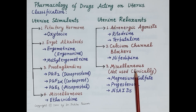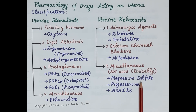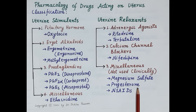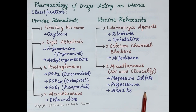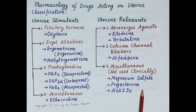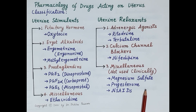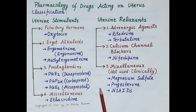Miscellaneous drugs used as uterine relaxants but not used clinically include magnesium sulfate, progesterone, and non-steroidal anti-inflammatory drugs. The information provided in this video is meant exclusively for students from an examination point of view. For clinical use of tocolytics as well as uterine stimulants, kindly consult your physician.